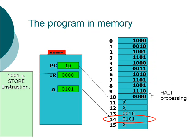Now the program counter increments to 10 — and that's a decimal 10, not a binary 10. The contents of memory location 10 is 0, 0, 0, 0, which is then loaded into the instruction register. The instruction register says: that's a HALT command, and all processing stops. That is the end of the execution of our program.